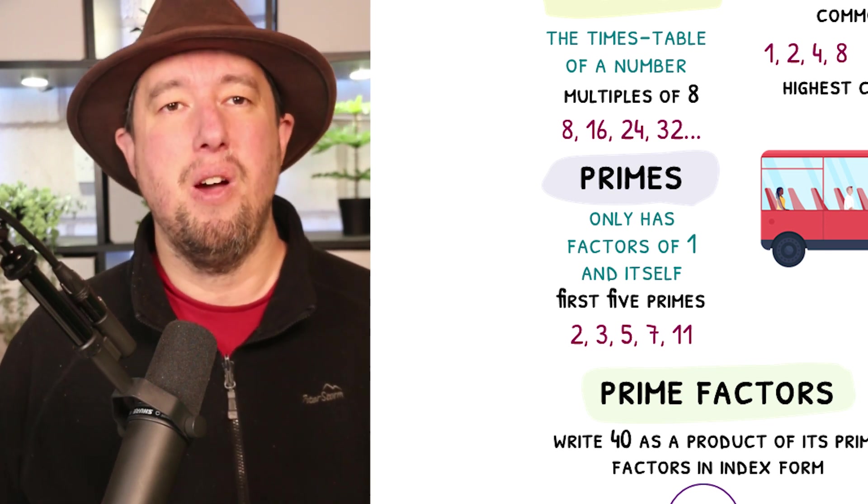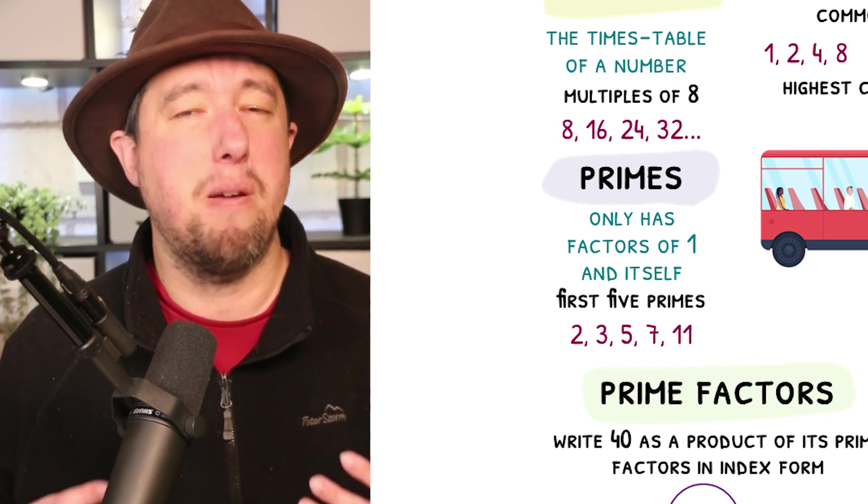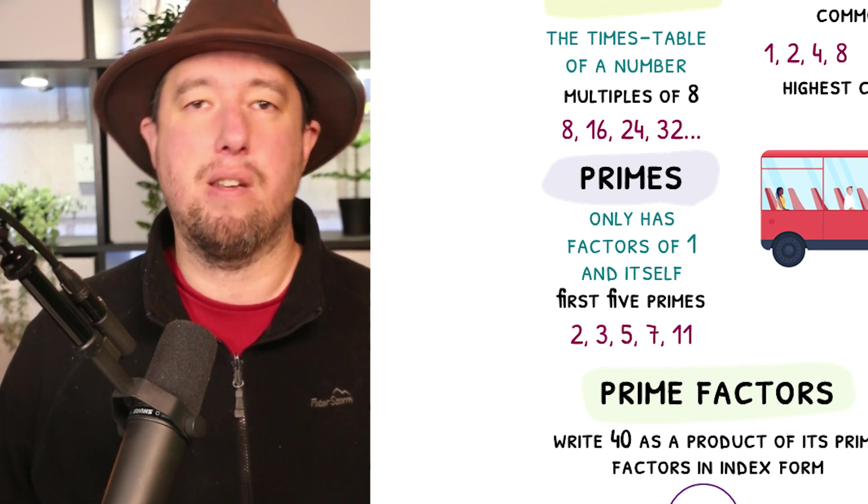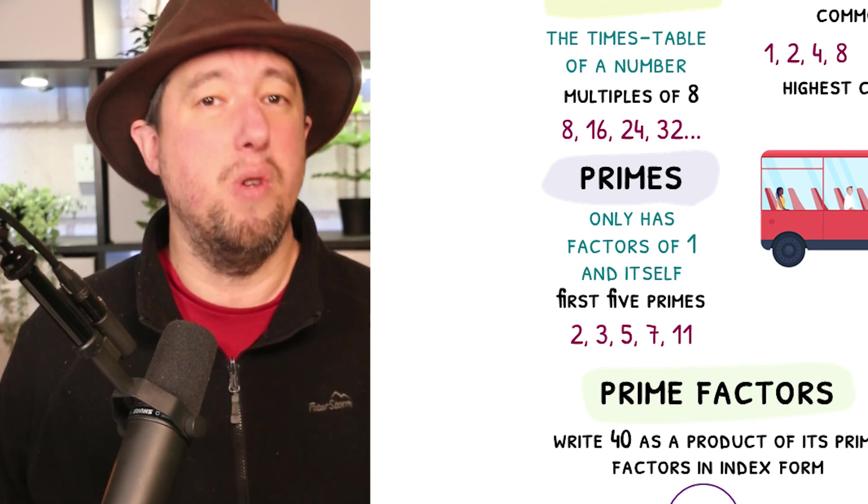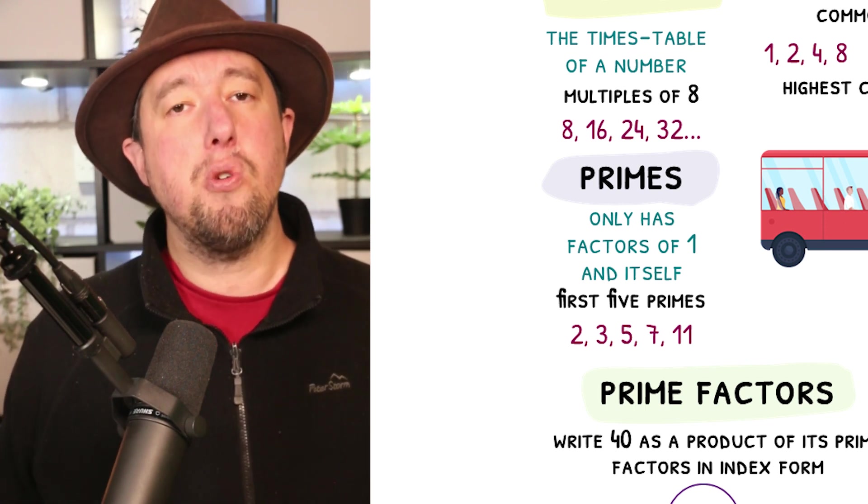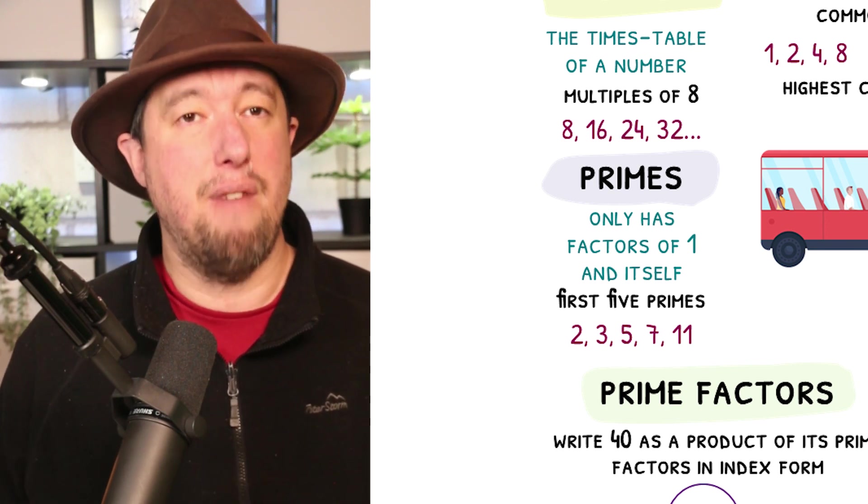Confusion often ensues when discussing the first prime number. Many students have made compelling arguments that one should be classified as a prime number. Unfortunately, modern mathematics would break apart if 1 was in the prime club, so the smallest prime number is 2. 2 is also the only even prime number since all other even numbers have 2 as a factor.